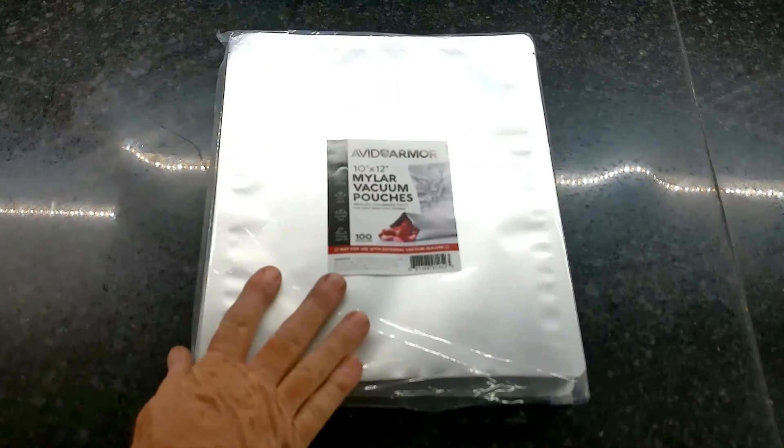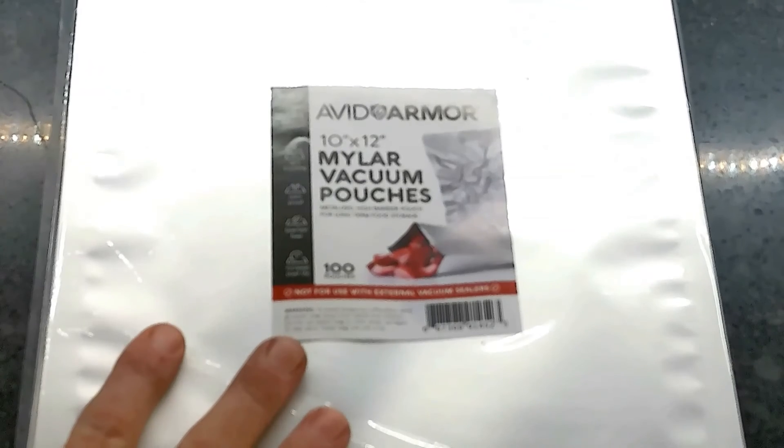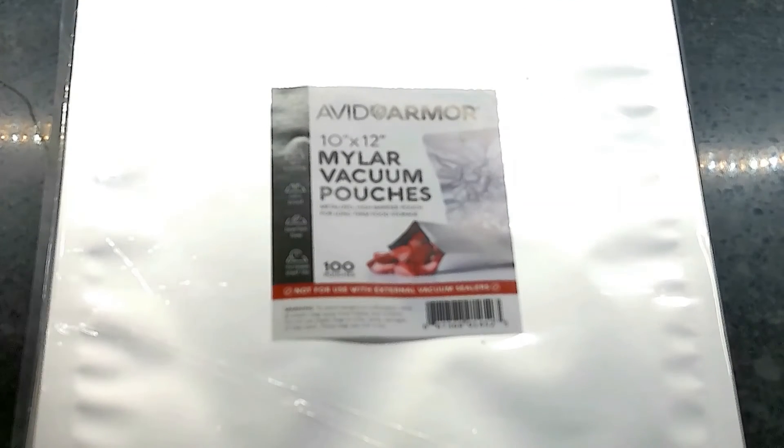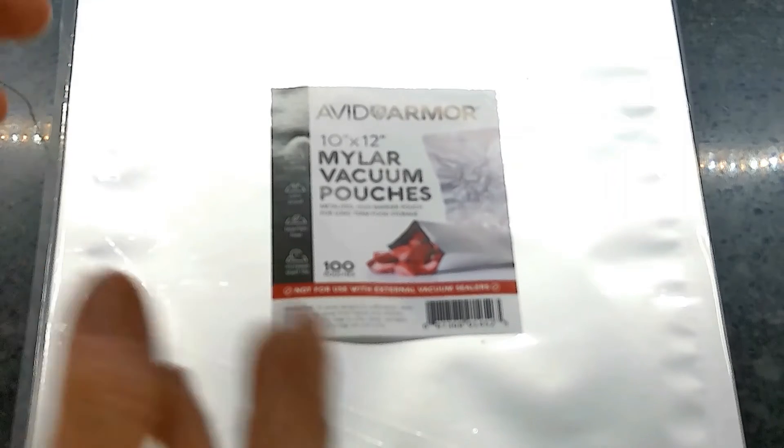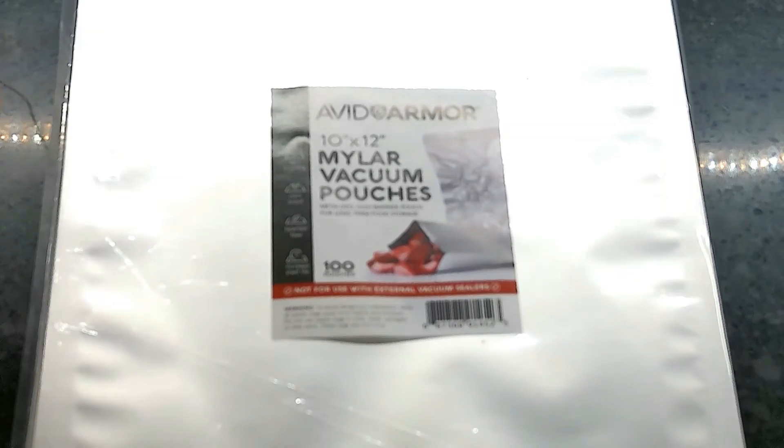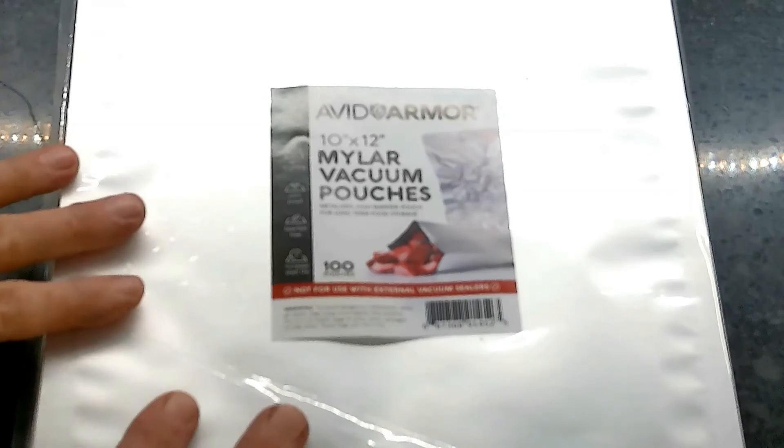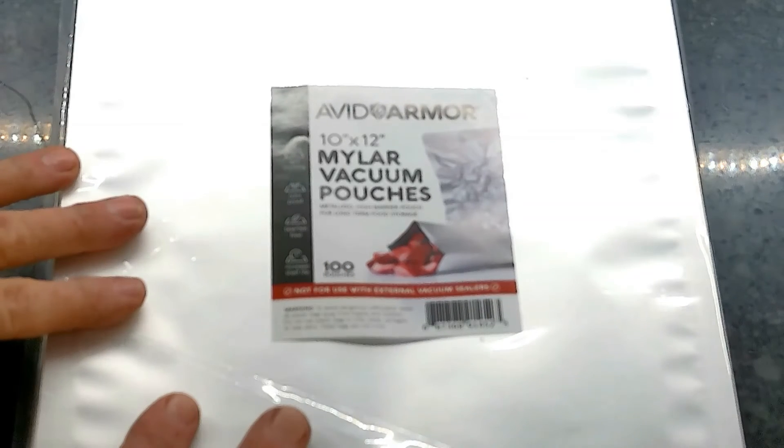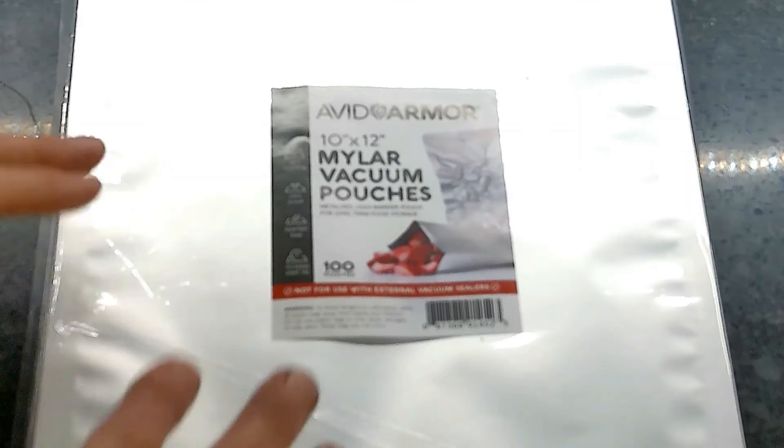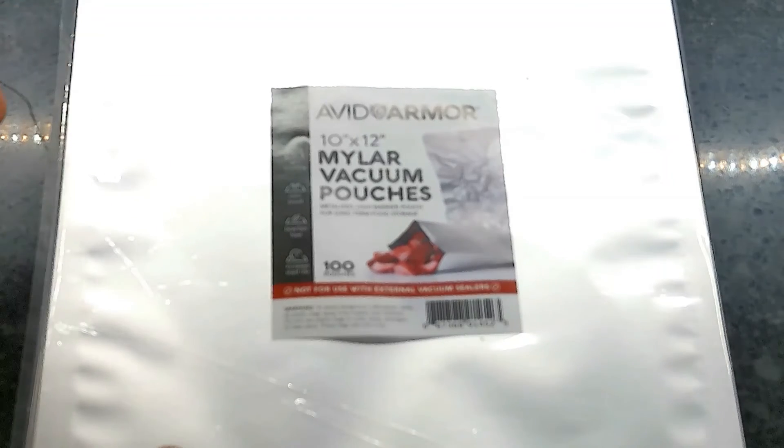So this is my review of the Avid Armor pouch. Really don't have any problems with it. It is a thinner bag. And so it kind of falls into a different category than the traditional 7 mil food storage bags. But I still like these bags. You get more bags for your money because they are a thinner material.